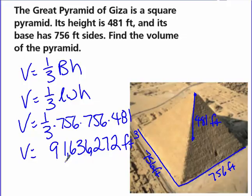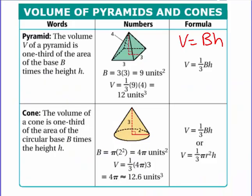To review: to find the volume of a pyramid or a cone, you find the volume of its parent shape — which is the prism or the cylinder — and you divide it by 3, or take one-third of it. And that's how you find the volume of a pyramid or a cone.